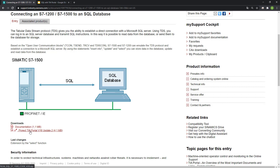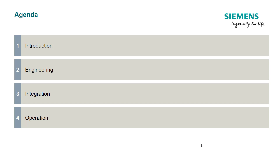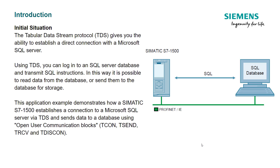Here you're going to find the documentation and the available project. The agenda for this topic is going to be the introduction, engineering, integration, and operation. The tabular data stream protocol gives you the ability to establish a direct connection with a Microsoft SQL Server. Using TDS you can log into an SQL Server database and transmit SQL instructions. In this way it is possible to read data from the database or send them to the database for storage. This application example demonstrates how the S7-1500 establishes a connection to a Microsoft SQL Server via TDS and sends data to the database using open user communication blocks.